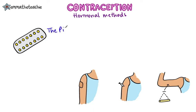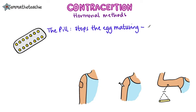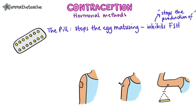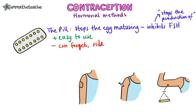First up, we've got the oral contraceptive pill. This is taken every day and contains hormones that will stop the egg from maturing. The hormone that normally makes eggs mature is FSH, so the pill inhibits FSH — it stops the production of FSH. The big advantage of the pill is that it's easy to use, and if used properly, it's highly effective. The disadvantage is it can be easy to forget to take it, or if you vomit you can lose your pill for the day, and it has some side effects like increased blood pressure.